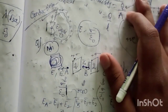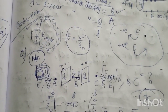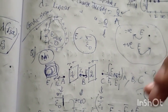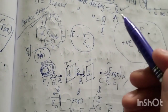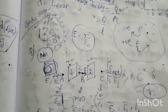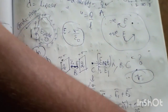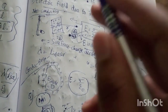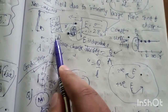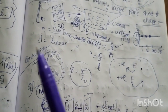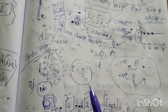Next topic: infinitely large plane sheet of charge. For a non-conducting infinitely large plane sheet of charge, the formula is E equals sigma by 2 epsilon naught. For a conducting infinitely large plane sheet of charge, the formula is E equals sigma by epsilon naught.